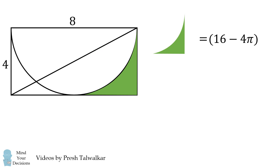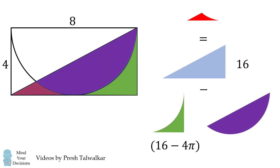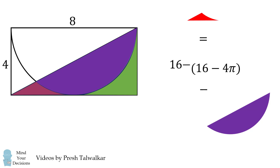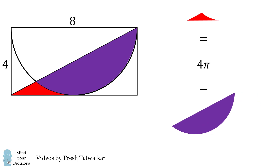So now let's simplify some of the results we've already established. We'll take the area of the right triangle and subtract the area of this green shape to get 16 minus the quantity 16 minus 4π. This simplifies to be 4π.